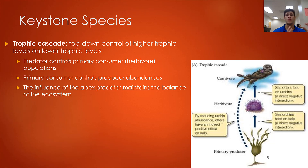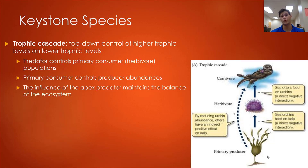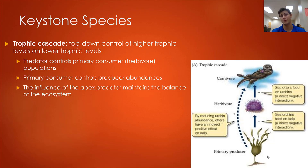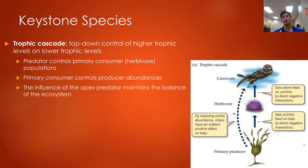A trophic cascade refers to top-down control of higher trophic levels on lower trophic levels. When we look at the role of an apex predator, we look at its influence on secondary consumers, primary consumers, and ultimately producers. Apex predators control the abundances of their prey, and those prey organisms control the abundances of the plants they eat. The influence of an apex predator maintains the balance of the entire ecosystem through these indirect interactions.